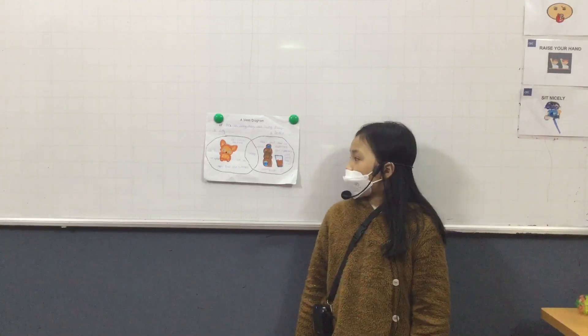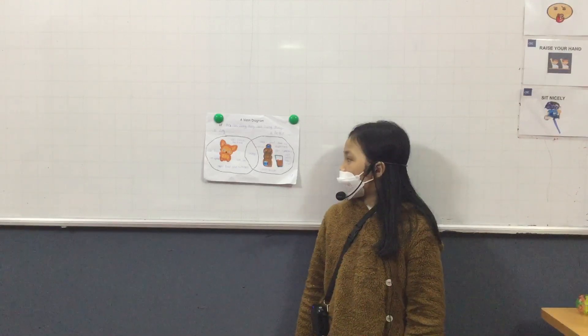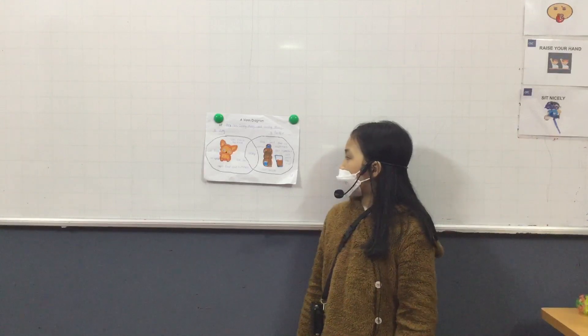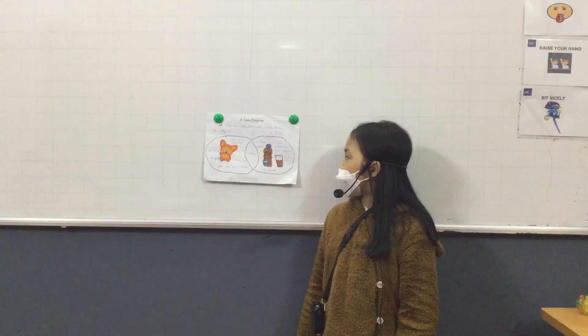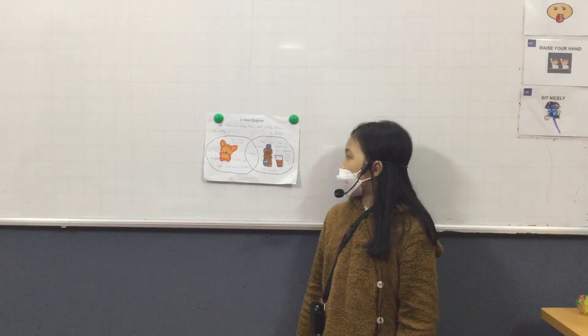The fourth difference between the dog and the bottle is the dog can reproduce but the bottle can't reproduce.